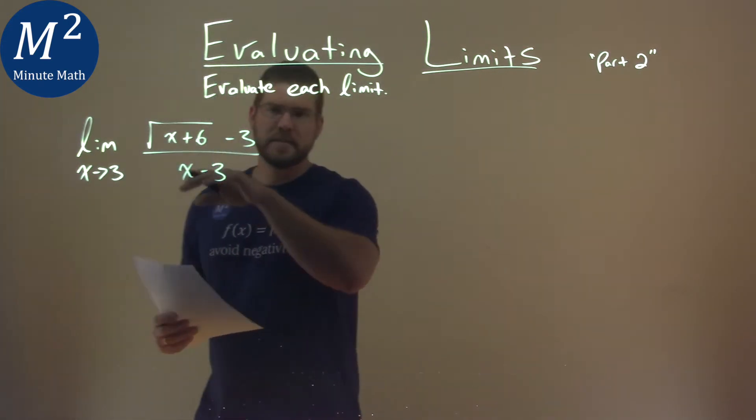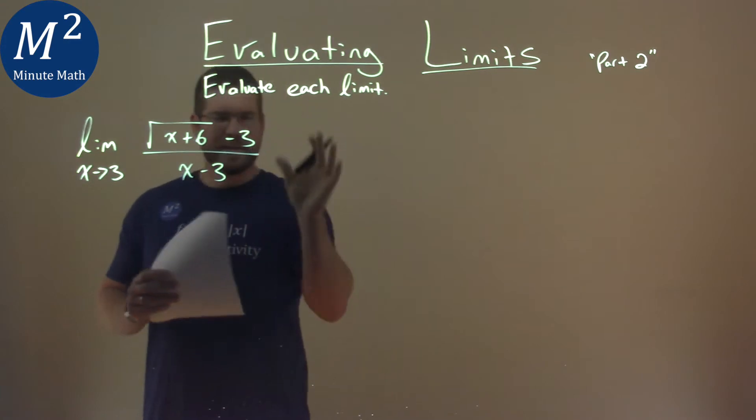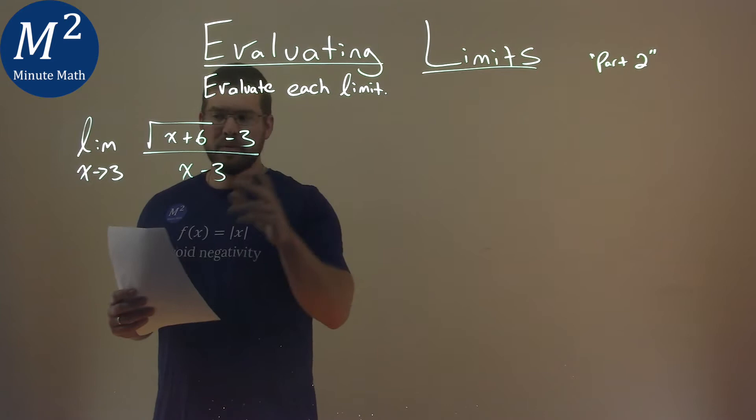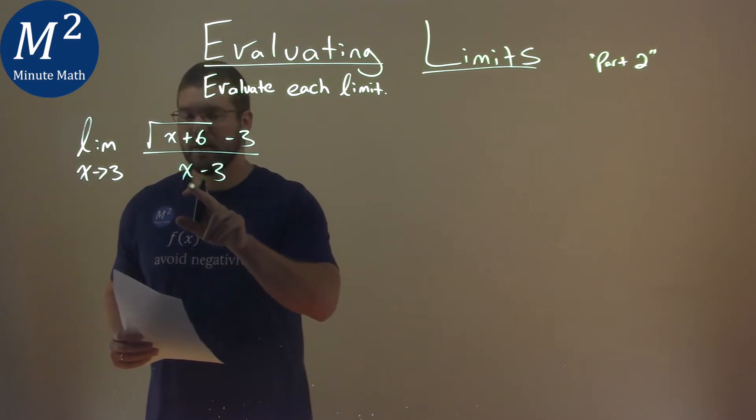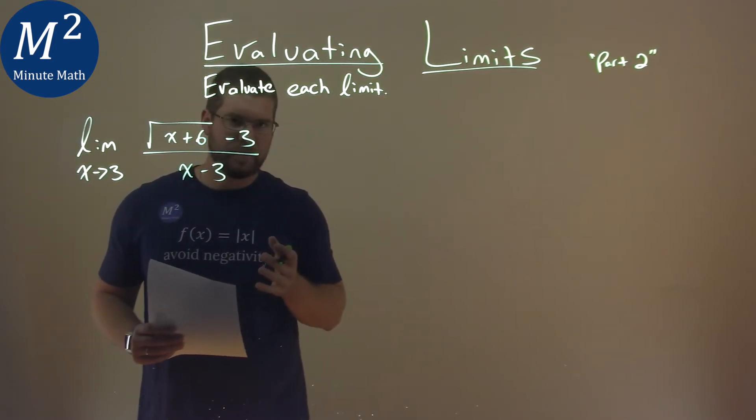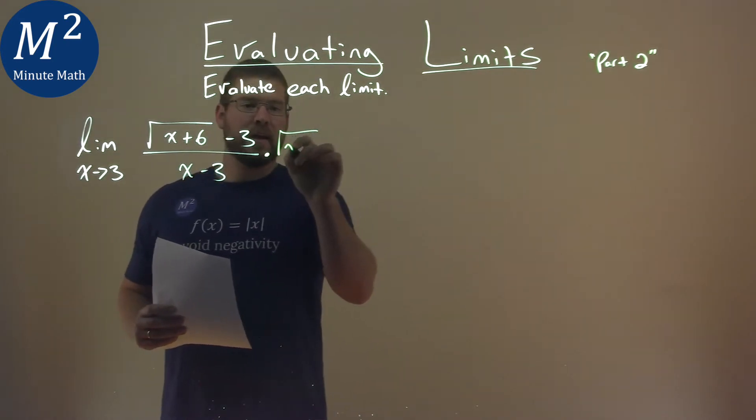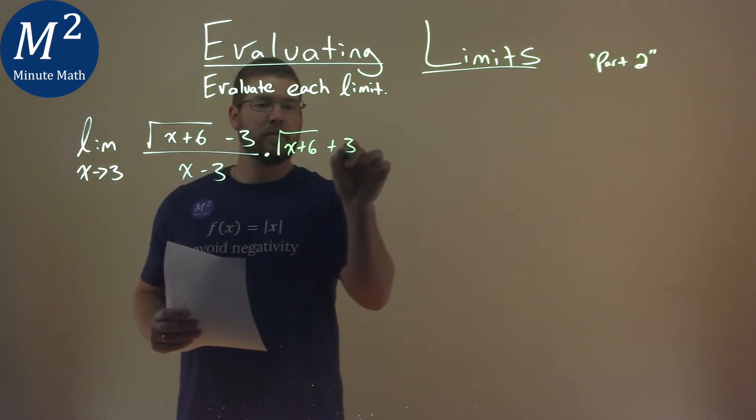What I like to do when I see square roots and we're trying to cancel something out, I'm going to multiply this by its conjugate. We have to because we can't just plug 3 into the denominator because we're dividing by 0. So I'm going to multiply this by its conjugate which is the square root of x plus 6 plus 3 over itself.